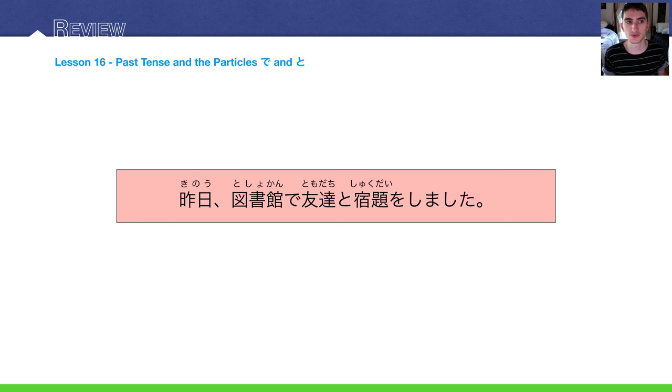And the key sentence for lesson 16 was: kinoo, toshokan de, tomodachi to shukudai wo shimashita. So, kinoo is yesterday, toshokan is library, de at with action verbs. Tomodachi friend, to with, shukudai wo shimashita, did. Literally, in English, this is yesterday, I did homework with a friend, or friends, at the library.